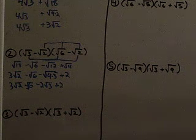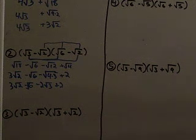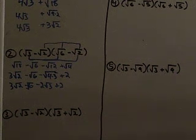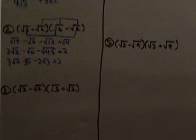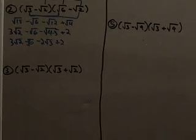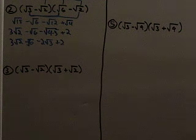There's nothing else I can do there — I can't combine any more like terms. Alright, so let's look at the next one. We have the square root of 3 minus the square root of 2 times the square root of 3 plus the square root of 2.